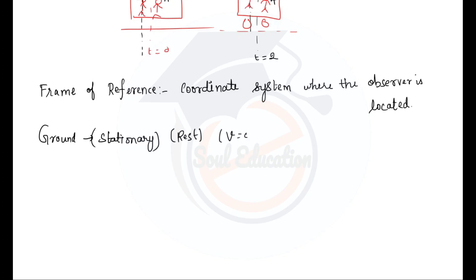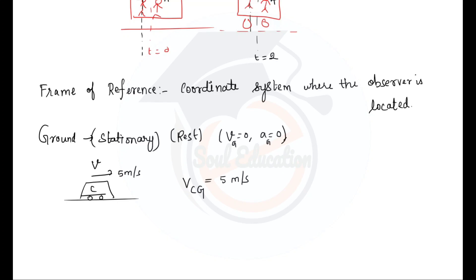So absolute velocity and absolute acceleration are measured with respect to the ground. If a car is moving with velocity 5 meters per second, this velocity is the velocity of the car with respect to the ground, which equals 5 meters per second. This is the absolute velocity — velocity with respect to the ground. The velocity of the ground itself is zero.